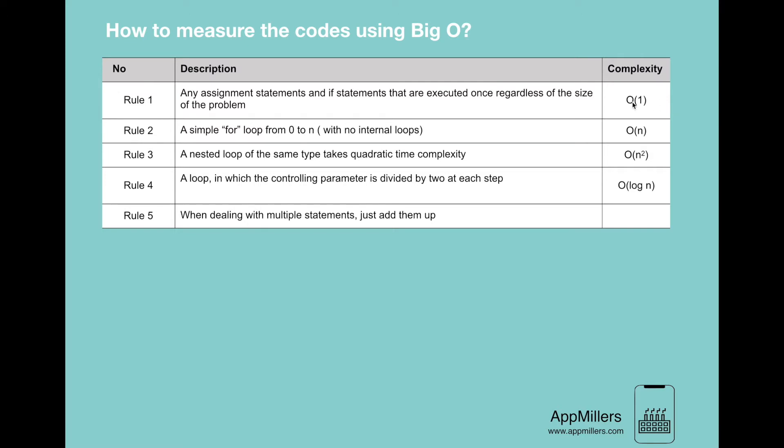And the second rule says that a simple loop from 0 to n with no internal loops takes O(n) time complexity, which is linear time complexity.